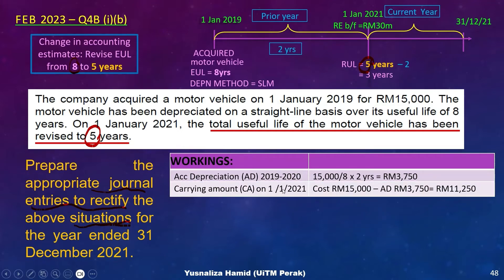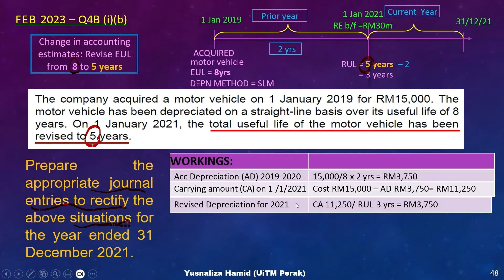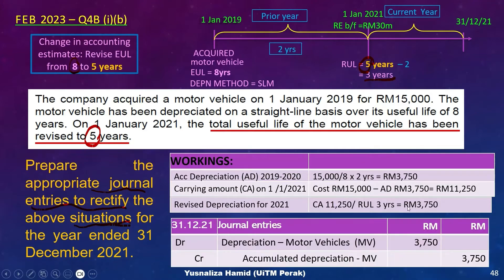Next, calculate the carrying amount at the beginning of the year when the change in accounting estimate took place. Take the cost of 15,000,000 and deduct the accumulated depreciation before the revision, giving 11,250. The revised depreciation is then the carrying amount of 11,250 divided by the remaining useful life of 3 years, giving 3,750. Therefore on 31st December 2021, the revised annual depreciation of the motor vehicle is 3,750.